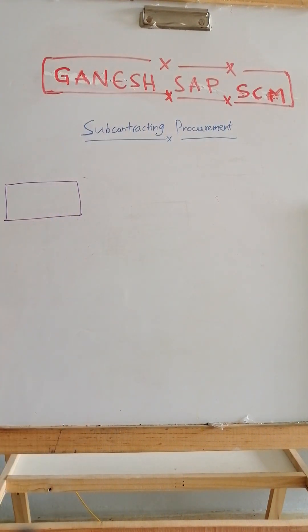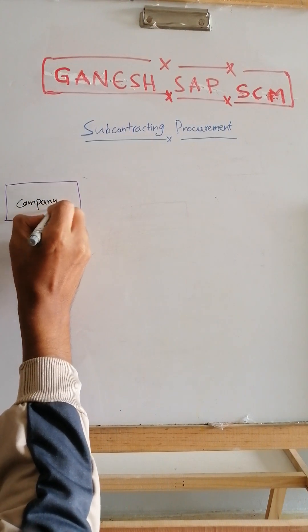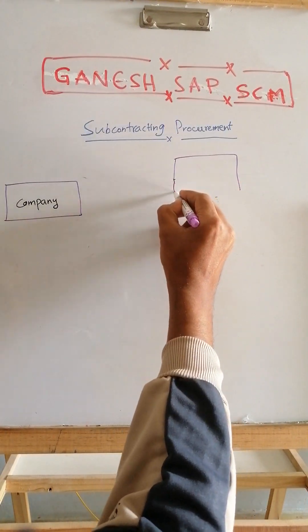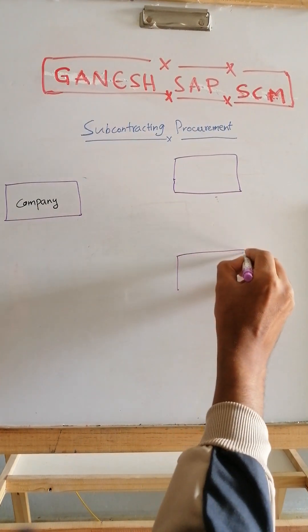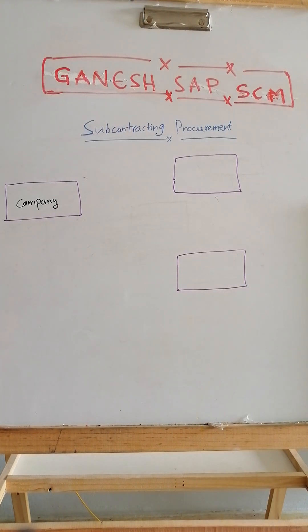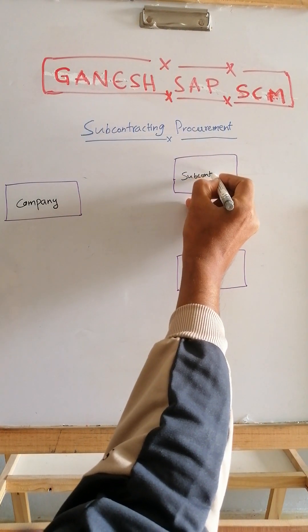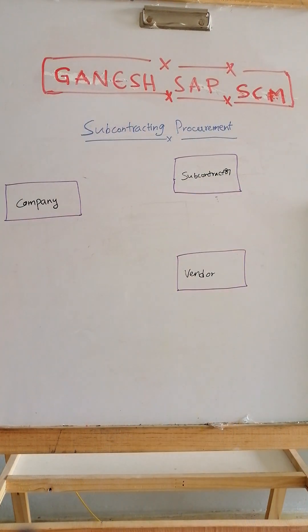In subcontracting you have a company, a subcontracting vendor — let's call them the subcontractor — and a normal vendor. The normal vendor generally provides you material, while the subcontractor assembles or makes your final product based on the components. In SAP, both are vendors — in S/4 HANA they are business partners, and in ECC they are created with transaction code XK01.